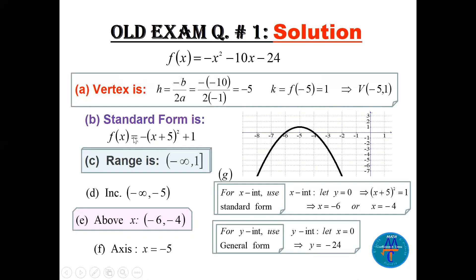The standard form is f(x) = a(x - h)² + k, where a = -1. So f(x) = -(x + 5)² + 1. We can graph it — this is a parabola reflected in the x-axis, shifted left 5 units and 1 unit up. The range will be from -∞ to 1. It's increasing from -∞ to -5.